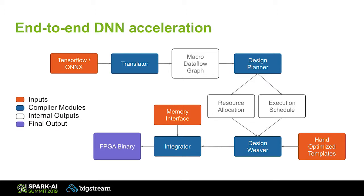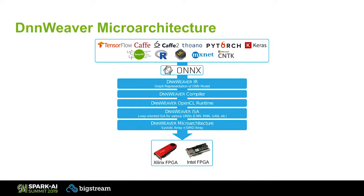Here's the big picture of the DNN Weaver flow. You send in a design with TensorFlow and ONNX. It goes through several steps involving translating and design planning, and it also takes as input hand-optimized templates and a memory interface — these are distributed with DNN Weaver, they wouldn't necessarily have to come from your team. The final output is an FPGA binary, a bit file, that's ready for upload. The goal of the DNN Weaver project was to create a stack for implementing DNNs on FPGA similar to what already exists for GPUs and CPUs. It involves a custom IR, a custom compiler, and an ISA.